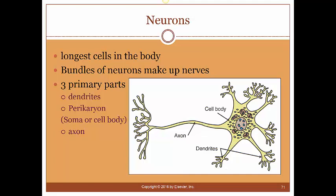When we look at the neuron itself, we have three primary parts. We have the dendrites, which receive information in — this can be received from another nerve, from pressure receptors in the skin, or different receptors in the intestinal tract. That information is then processed in what's known as the perikaryon or the soma, labeled here as the cell body. This is where the nucleus and all the organelles are located.